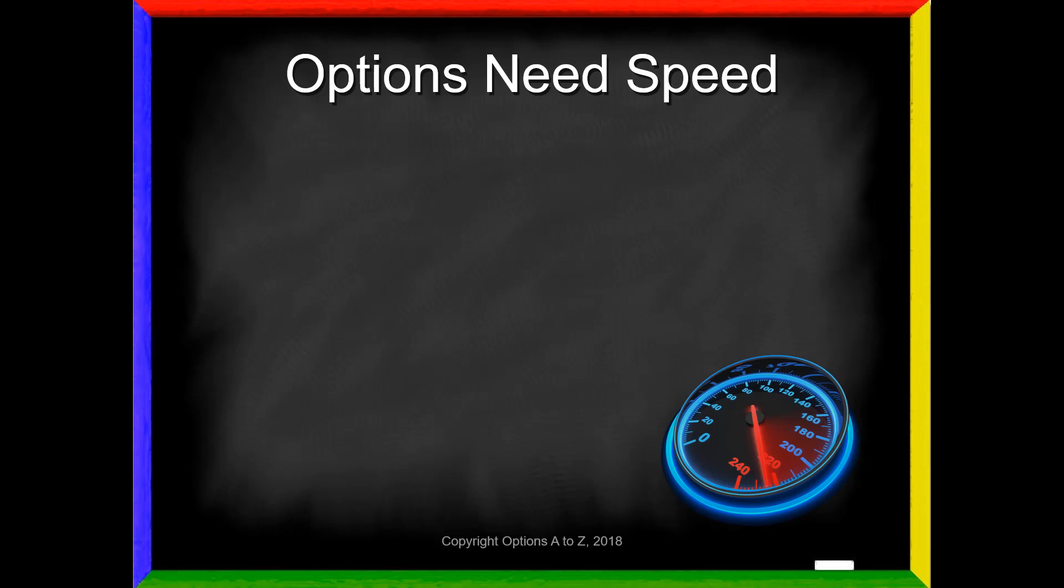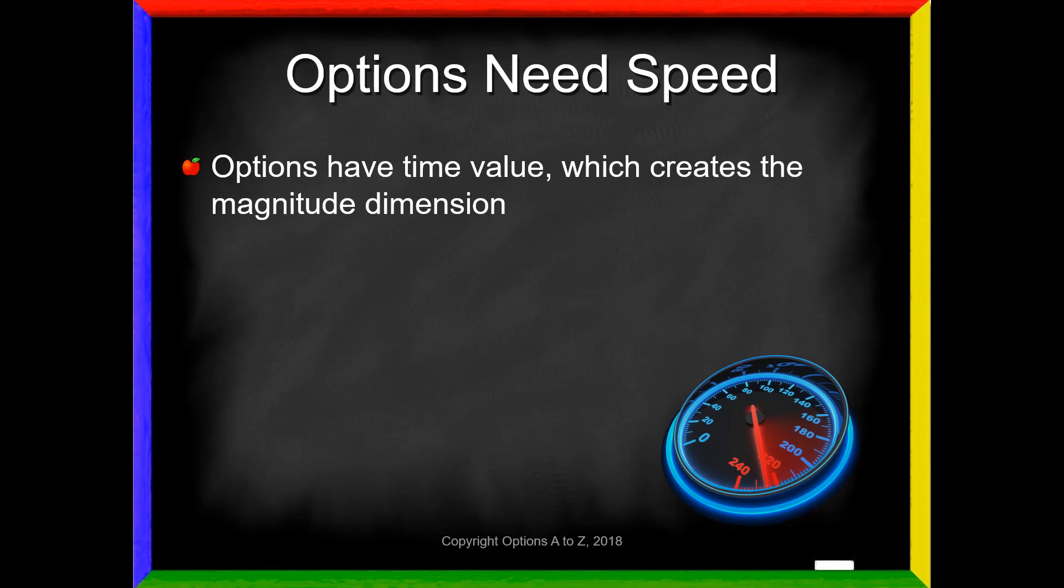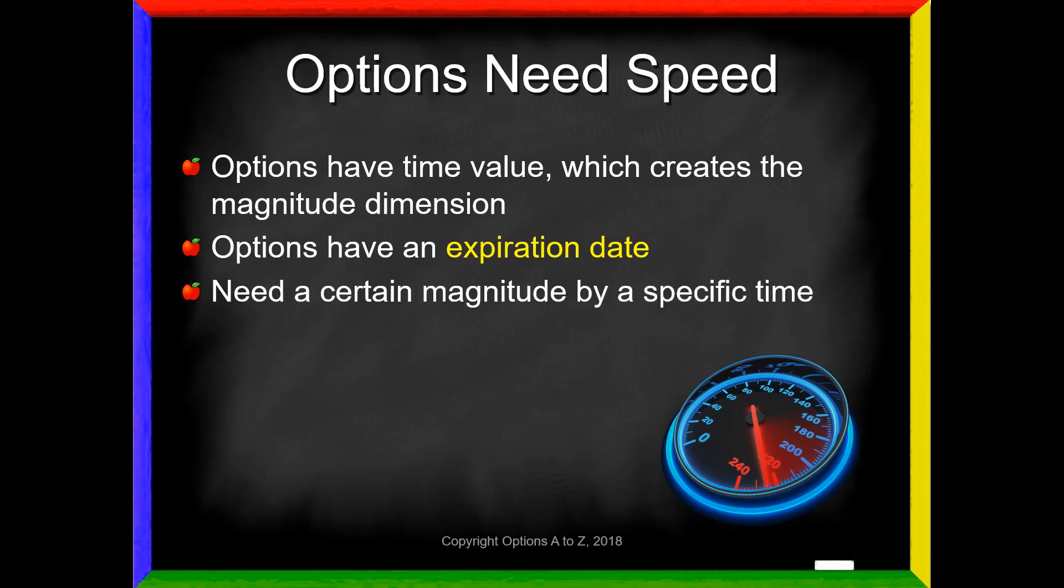In addition to that, however, options also need speed. We just saw that options have a time value which creates the magnitude dimension. But options also have an expiration date. And that creates the need for speed. We need a certain magnitude by a specific time. So therefore, options also need speed. That is the speed component.